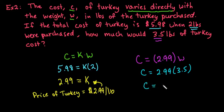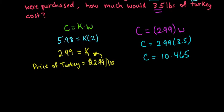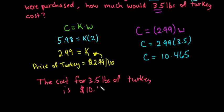And then we would just find C when w is 3.5. And with this, when you do multiply this out, this gives you 10.465. And we never really pay that a half a penny. So we could say that the total cost for 3.5 pounds of turkey is $10 and it would round to 47 cents.